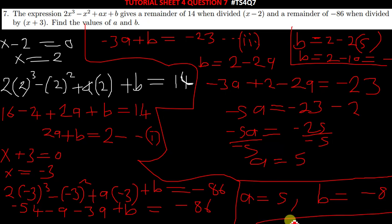So we conclude that the value of a is equal to 5 and the value of b is equal to negative 8. These are the answers you have been asked to find. Thank you very much for watching today's tutorial. We'll be solving question 8 in the next video. If you haven't subscribed to the channel, kindly do so so you don't miss upcoming videos. Shalom.